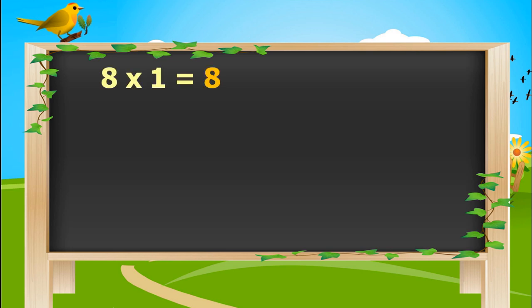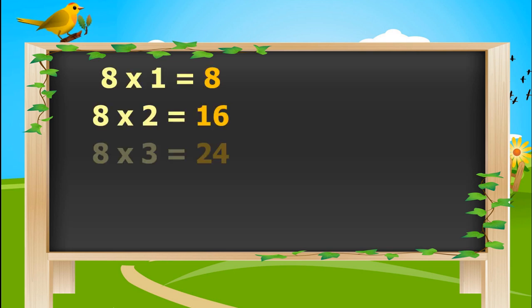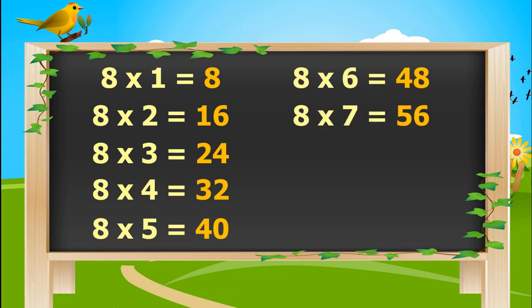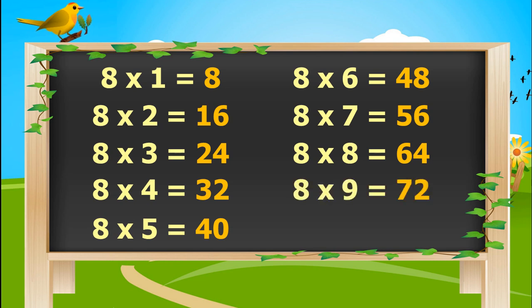8 1 is 8. 8 2s are 16. 8 3s are 24. 8 4s are 32. 8 5s are 40. 8 6s are 48. 8 7s are 56. 8 8s are 64. 8 9s are 72. 8 10s are 80.